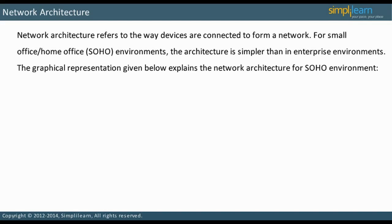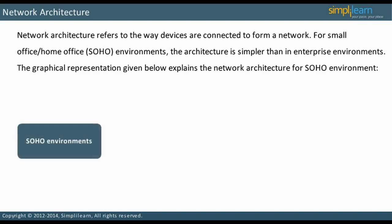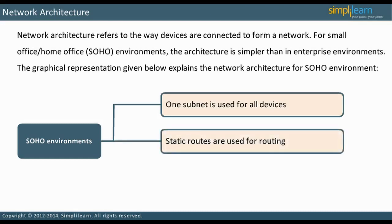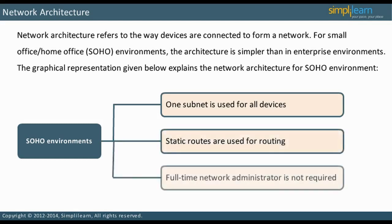For small office, home office, SOHO environments, the architecture is simpler than in enterprise environments. There may be an all-purpose device instead of a separate router, switch, and firewall. For example, for home use, most routers are really a router and a switch combined. There is less redundancy, which makes configuring, maintaining, and troubleshooting the network simpler. Usually, one subnet is used for all devices, and static routes are used for routing. There is no full-time network administrator.